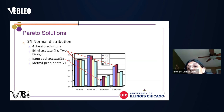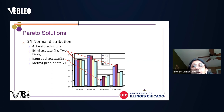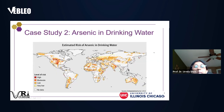Case study two: arsenic in drinking water. Arsenic contamination is a global problem, particularly severe in Bangladesh where tube well arsenic levels are dangerously high and harmful to human health.